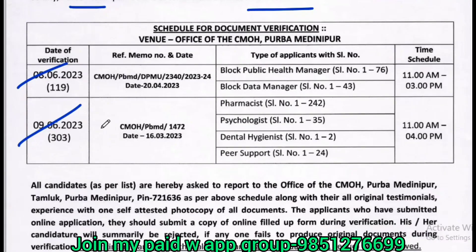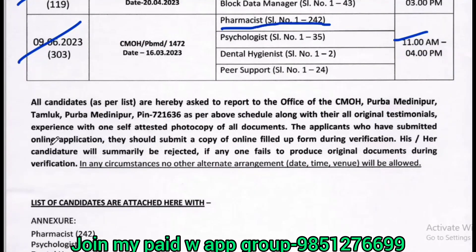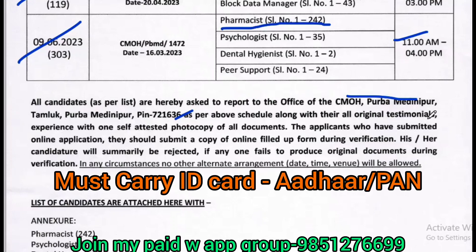The date is the 8th and the 9th, specifically 9th March. All candidates are to report to the CMOH office. You can see the pin number 721636. They must appear as per schedule along with all the original testimonies.